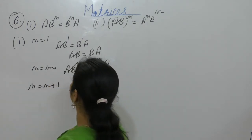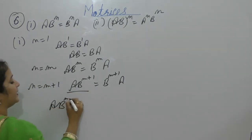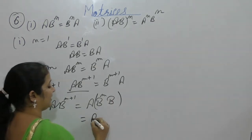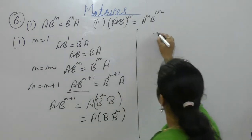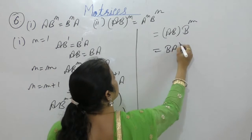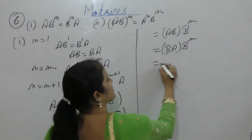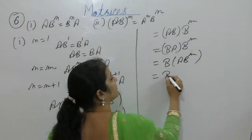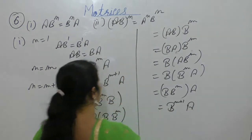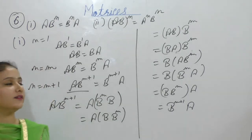Now we have to prove that result is true for m equal to m plus 1. Take the left hand side: AB^(m+1), we can write it as B^m into B, which is AB into B^m. Since the matrices commute, AB equals BA, so this becomes BA into B^m, which equals B^(m+1) into A. Therefore the result is true for n equal to m plus 1, hence the result is true for all positive integers n.